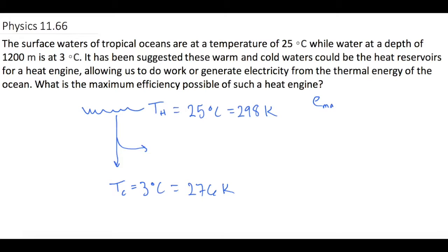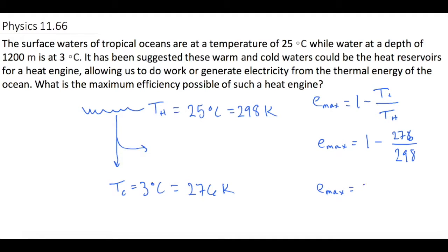Now we'll use e_max, which is equal to 1 minus Tc over Th. So our e_max is equal to 1 minus Tc, which is 276, over Th, which is 298. This gives us an e_max of 0.0738, or a theoretical maximum efficiency of 7.4 percent.